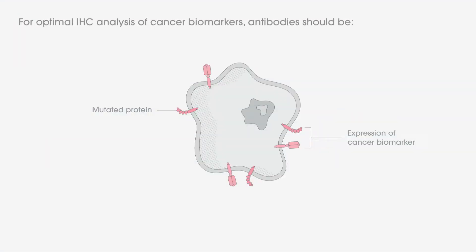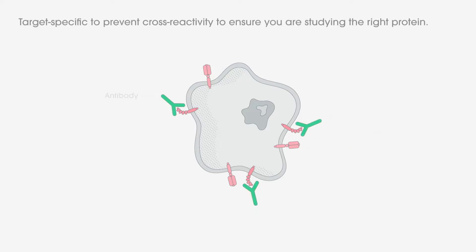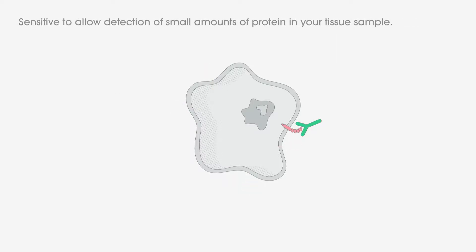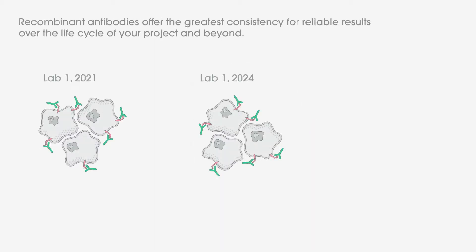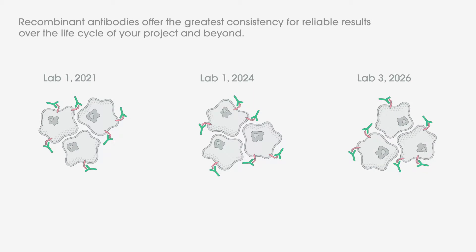For optimal IHC analysis of cancer biomarkers, antibodies should be target-specific to prevent cross-reactivity and ensure you are studying the right protein; sensitive to allow detection of small amounts of protein in your tissue sample; and reproducible — recombinant antibodies offer the greatest consistency for reliable results over the life cycle of your project and beyond.